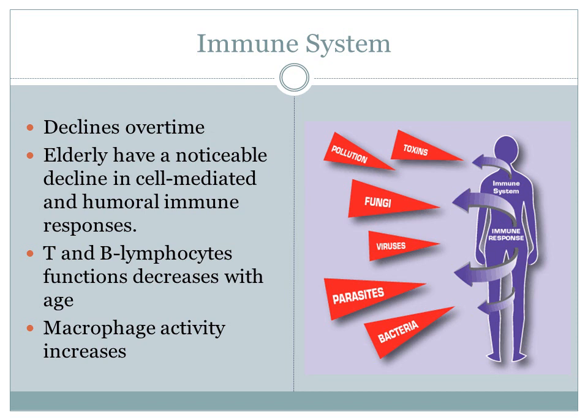It is important to first start with the immune system when discussing sepsis. The immune system is responsible for protecting the body against microorganisms. As we age, the immune system declines and can contribute to infections such as sepsis. The elderly have a noticeable decline in cell-mediated and humoral immune responses. T lymphocytes work to destroy antigens. B lymphocytes are responsible for eliminating bacteria, neutralizing bacterial toxins, preventing viral infections, and producing immediate inflammatory responses. The macrophages recognize and engulf foreign materials. T and B lymphocyte functions decrease while macrophage activity increases with age, causing the elderly to develop infections even with a small exposure to microorganisms.